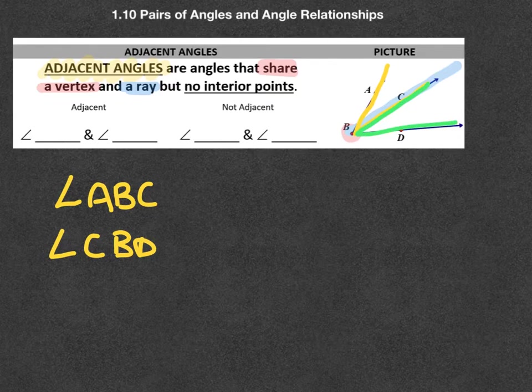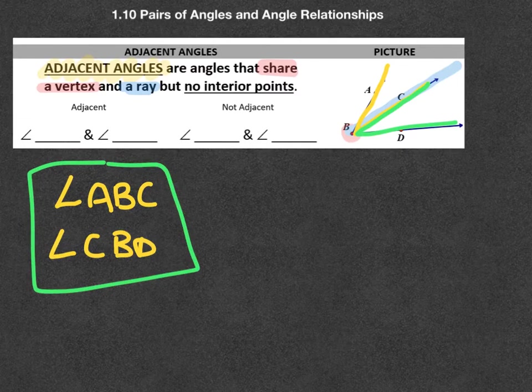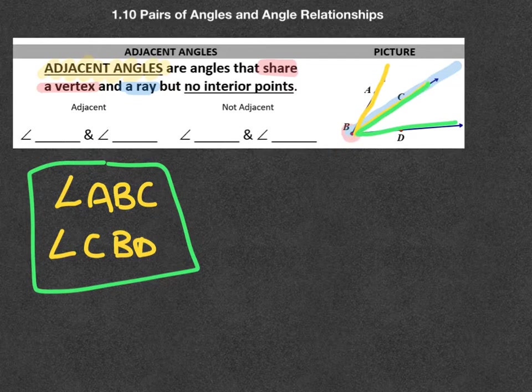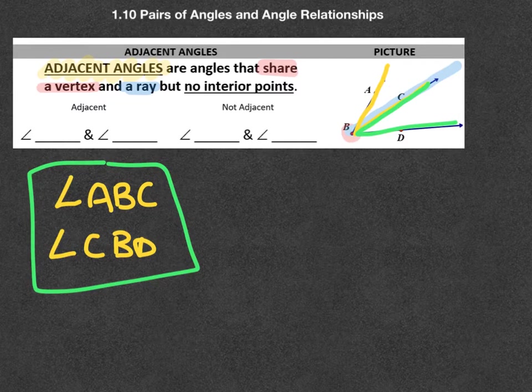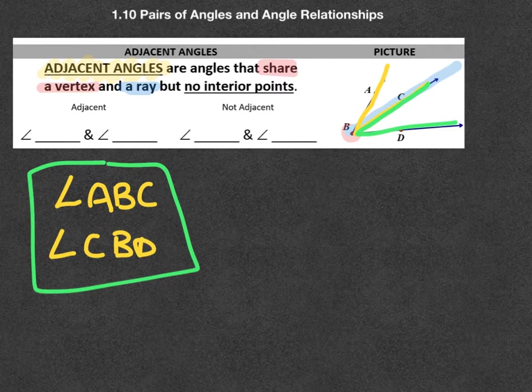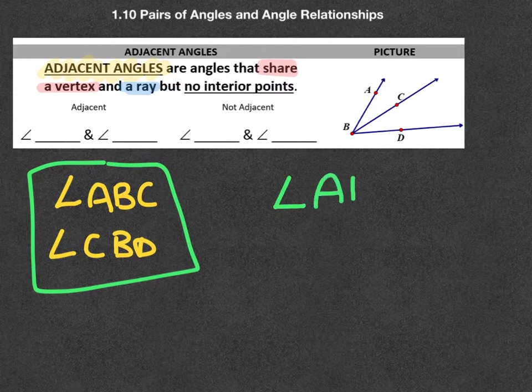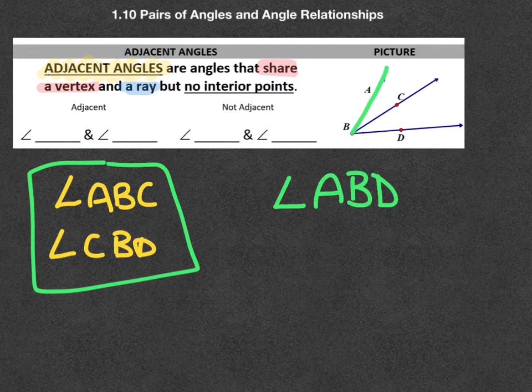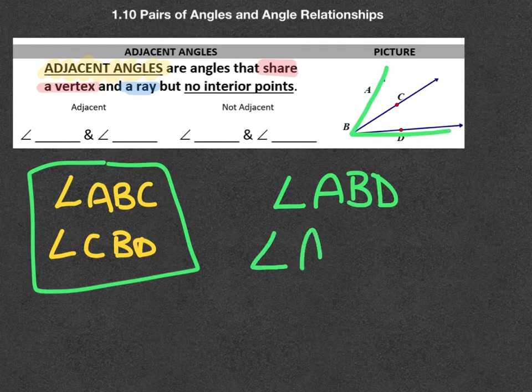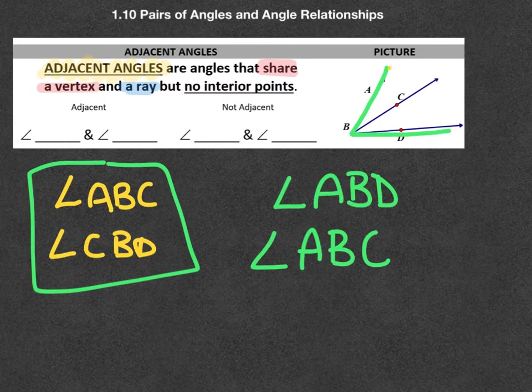We can see that these two guys together meet the criteria. They share the vertex and they share the ray. All of the values in the interior here are separate from all the values here. A set that would not work would be something like ABD. So this guy, and angle ABC. Now, why would these not work? Let's show you the two of them.